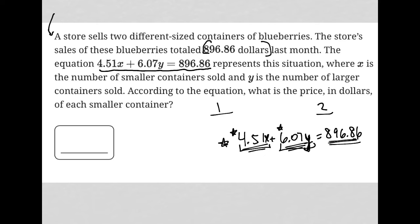Okay, so the question goes on to say, where x is the number of smaller containers sold, and y is the number of larger containers sold. So that makes sense. According to the equation, what is the price in dollars of each smaller container?